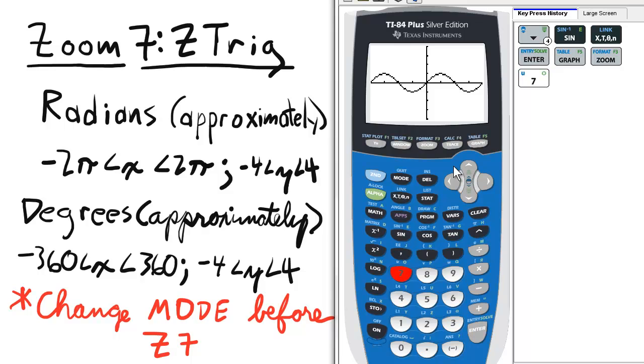This is a source of frustration for a lot of students because their functions may be in radians and then their viewing screen is in degrees.